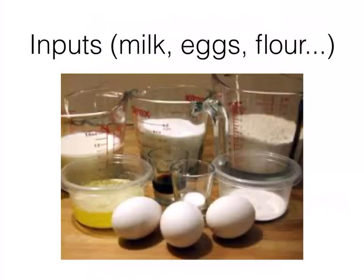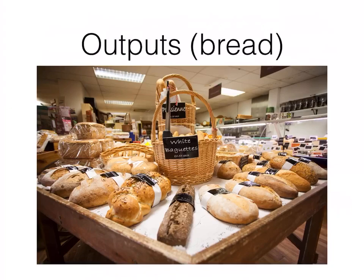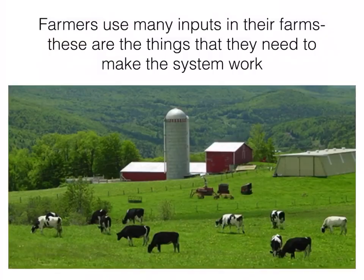The output would be the finished product - my handbag being shipped out to customers. A farm can be seen the same way. For example, in a bakery the inputs would be milk, eggs, and flour; the process is baking bread and cakes; and the output would be the finished baked goods. So farms can be seen as a system.